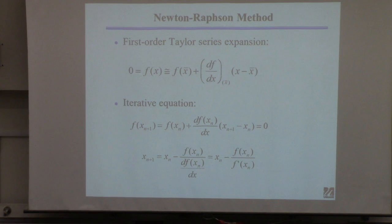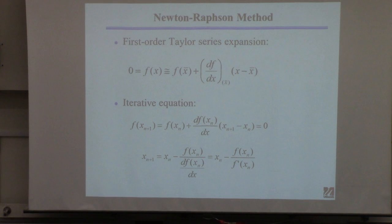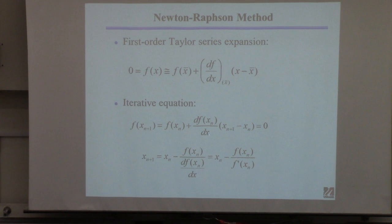The real value of Newton-Raphson is that it works — it's much more robust, meaning it will work from poorer initial guesses than the fixed-point method. It converges much faster generally. The cost is that you have to compute the derivative. For a simple function that's not a big deal, but if you have more than one equation you don't need a single derivative — you need a whole matrix of derivatives. For a 100×100 system you'd need 10,000 derivatives.